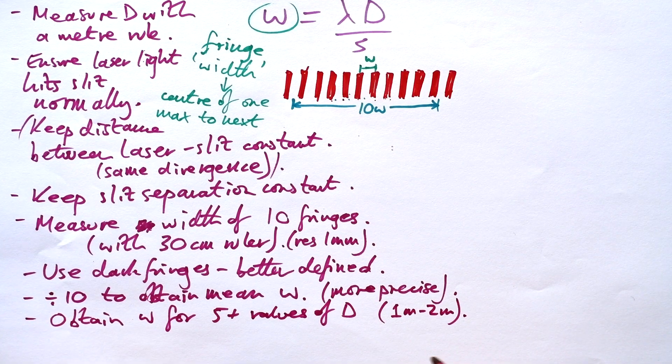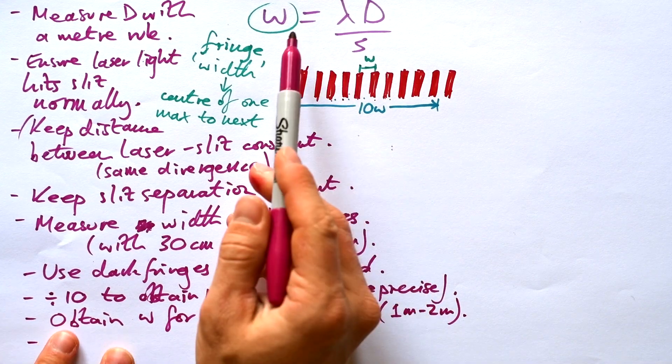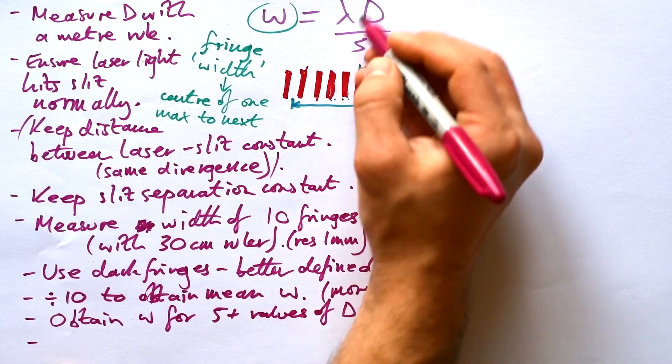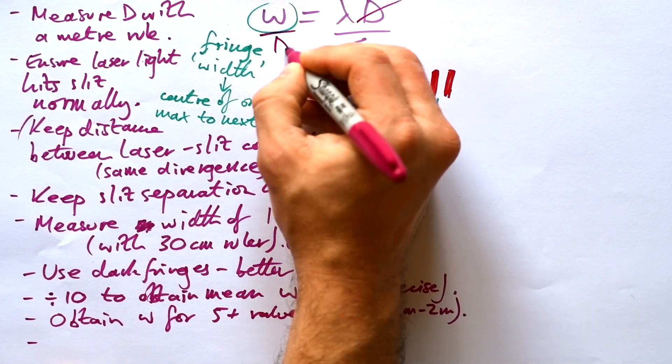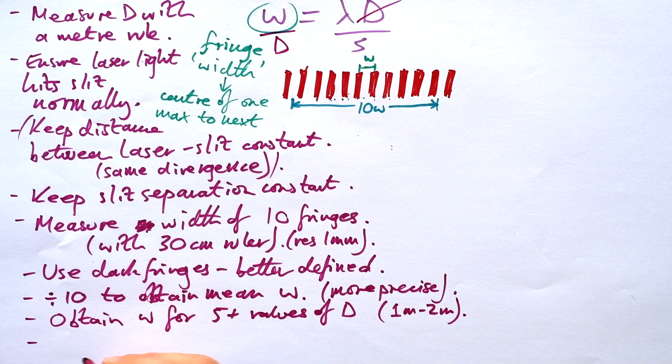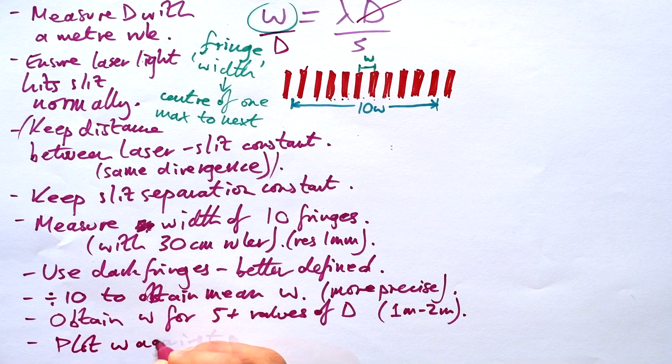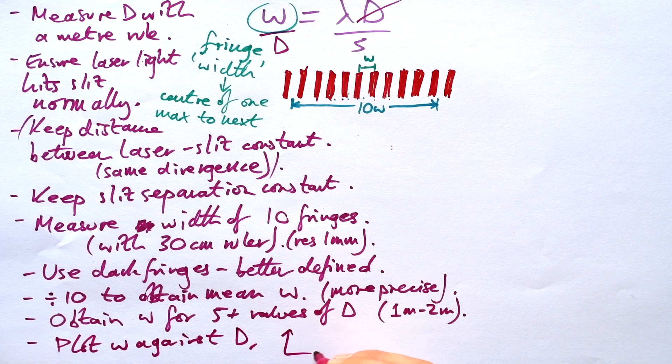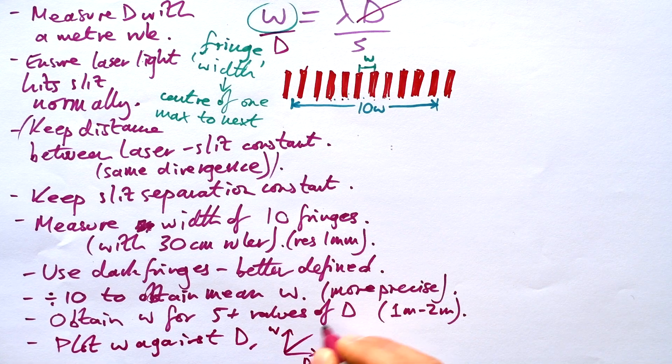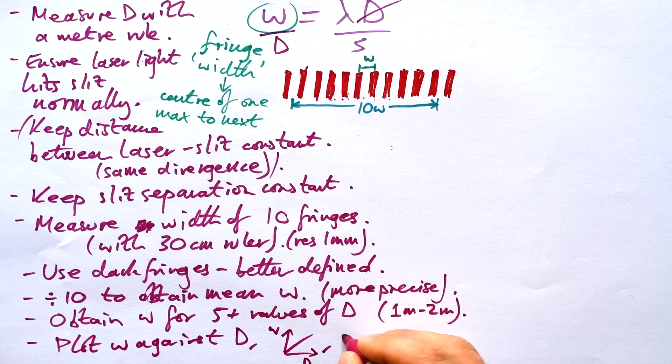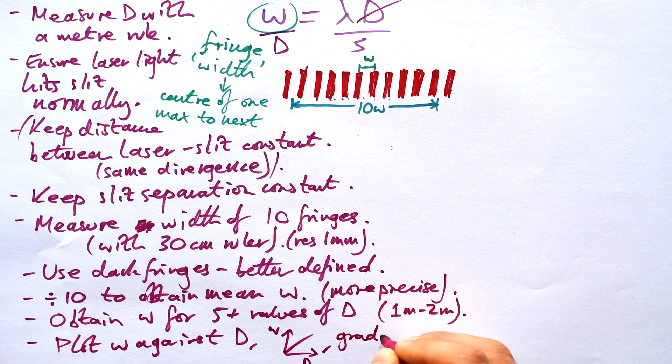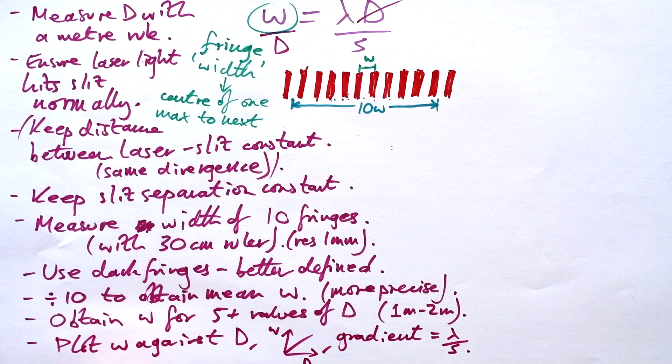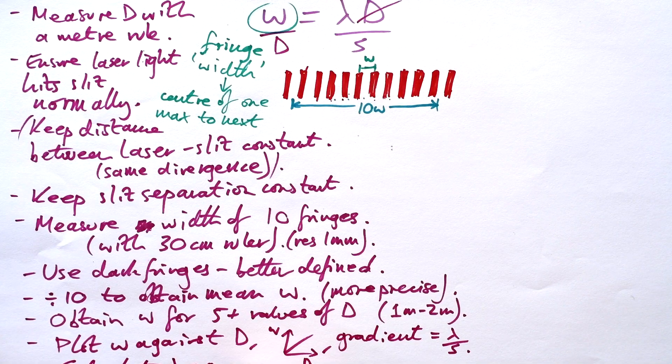And then from our equation we can see that if we have W equals Lambda D over S if we divide by D on this side then we end up with Lambda over S. So if we plot a graph of W against D that's it there W D. Then we can see that the gradient is going to be equal to yes W over D but also Lambda over S. So then all we have to do is calculate Lambda equals gradient times S. Everything needs to be in meters obviously.